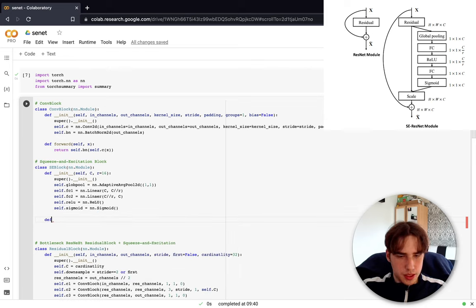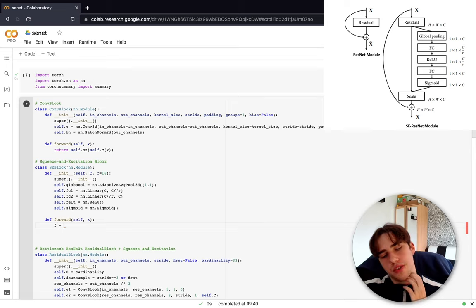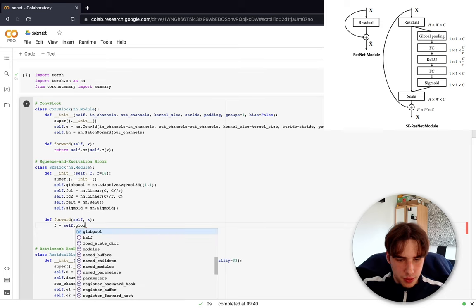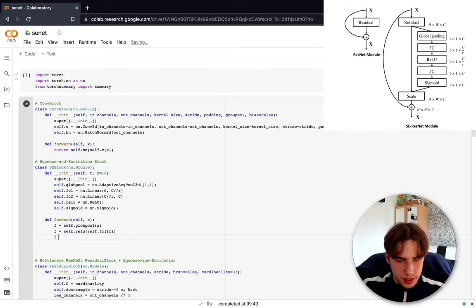Now we can define the forward function where we pass the output of residual mapping. We need to save it because later on we're going to scale it, so I'm going to define it as f from the same convention as it was in ResNet. First we're just squeezing by using global pooling, then we got the excitation, so ReLU, fc1(f), and sigmoid